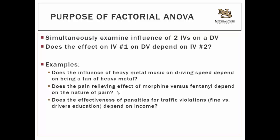The third example: does the effectiveness of penalties for traffic violations depend on income? Here you've got two independent variables — income and the penalty — and how those two things interact to predict the effectiveness of those penalties for minimizing traffic violations.